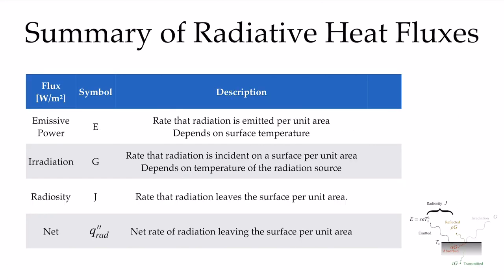To summarize our radiative heat fluxes: we have the emissive power E — the rate that radiation is emitted per unit area, which depends on the surface temperature. We have the irradiation G — the rate that radiation is incident on a surface per unit area, which depends on the temperature of the surroundings or the source of that radiation. The radiosity J is the combination of emission from the surface and the amount reflected of the irradiation — the rate that radiation leaves the surface per unit area. The net heat flux Q'' rad is the net rate that radiation is leaving the surface per unit area, requiring a full energy balance considering exchange between all surfaces involved.